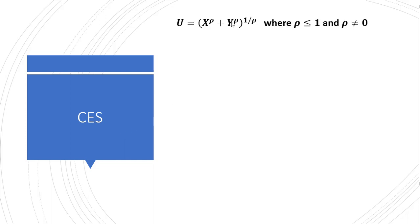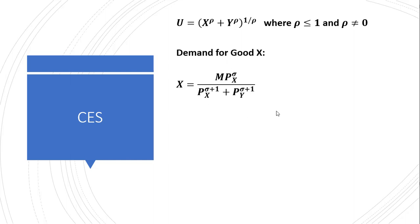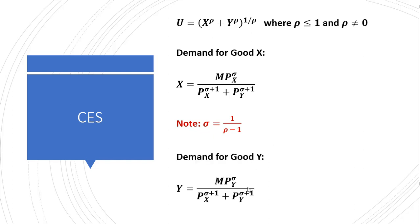Moving on to a constant elasticity of substitution — a CES utility function — taking this format. Given this general functional form for CES, the demand for good x will look like this. Note sigma here, which we define as one divided by rho minus one. And the demand for good y will be given as follows. m is income, and we have the price of good y raised to sigma, defined as one divided by rho minus one.